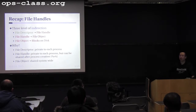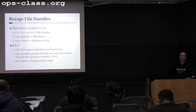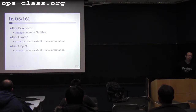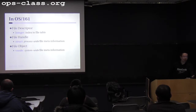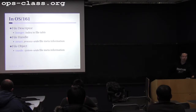In OS/161, the file descriptor is just an integer. The file handle is supposed to be a structure — you can think of it like a class in Java — containing process-wide file management information. We'll talk later about exactly what information you need to keep in the file handle. Finally, we have the file object, which is already provided to you. It's called vnode. We'll also talk about vnode today.